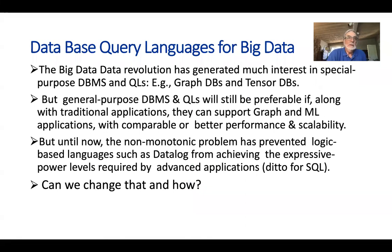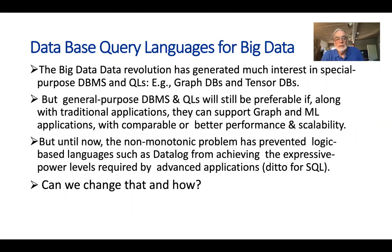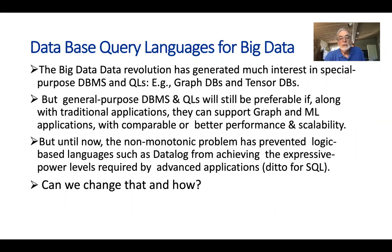Big data has profoundly impacted many computer fields, and for databases we have seen a number of special-purpose systems developed for graphs and tensor databases. However, general-purpose databases are still preferable if, along with traditional applications, they can support graph and machine learning applications with great performance and scalability.